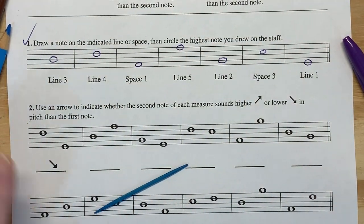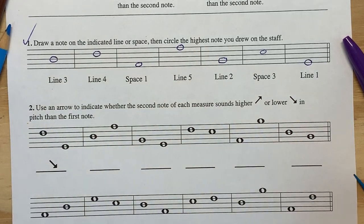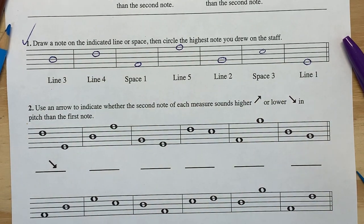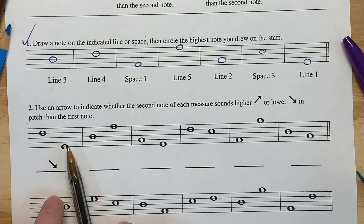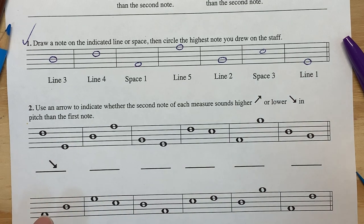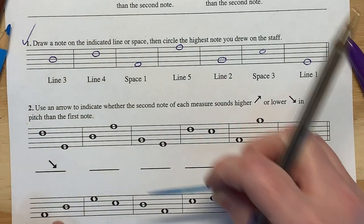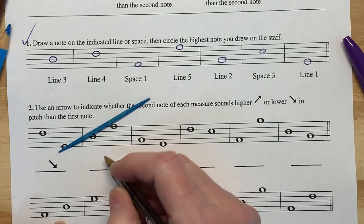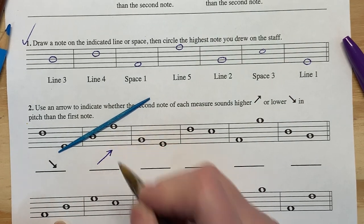Use an arrow to indicate whether the second note of each measure sounds higher or lower than the first note. So we want to know is this note higher or lower. Now great tip. Use that toothpick to kind of give you the indication. Ah it's moving up.